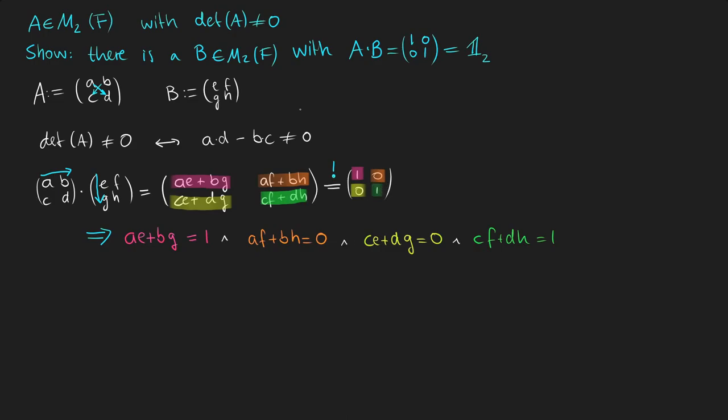Because from the task we are required that there is such a B with the following properties, we need to find values for E, F, G, and H depending on the values from the matrix A. But it's rather tricky to solve those equations, and therefore we will try to deduce some information just like this.